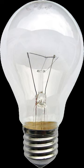Incandescent bulbs are manufactured in a wide range of sizes, light output, and voltage ratings, from 1.5 volts to about 300 volts. They require no external regulating equipment, have low manufacturing costs, and work equally well on either alternating current or direct current.